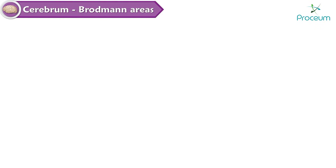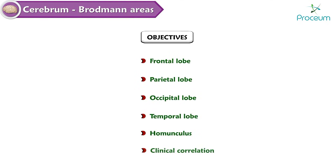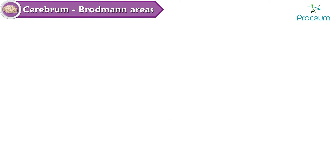Cerebrum — Brodmann Areas. The cerebral cortex is divided into 52 cytoarchitectural areas called Brodmann areas.